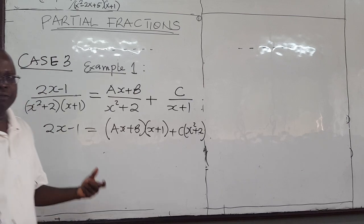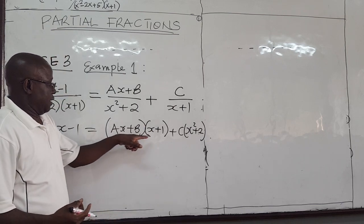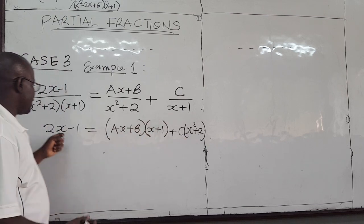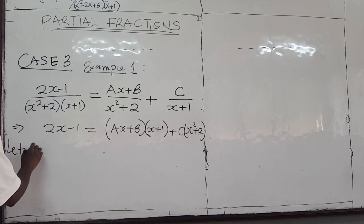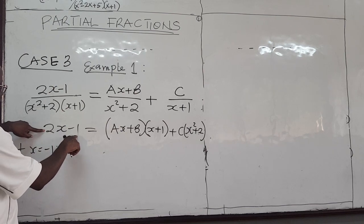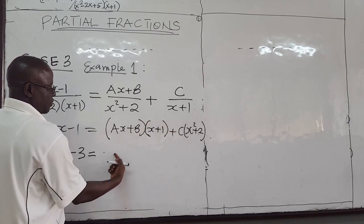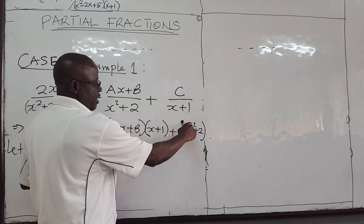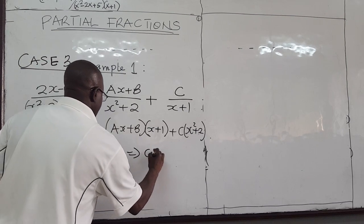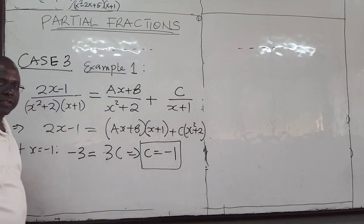I like to choose some values of x — that is the approach I often use. If I choose x to be negative 1, this factor goes to 0, so all of this cancels and I just have to solve for c. Let x equal negative 1. Then this gives me 2 times negative 1 is negative 2, and minus 1 here gives me negative 3. All of that term goes to 0. Negative 1 squared is 1, plus 2 is 3. So for c: negative 3 equals 3c, which implies c is equal to negative 1.